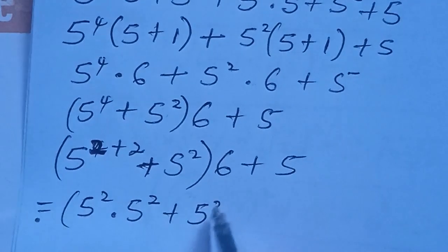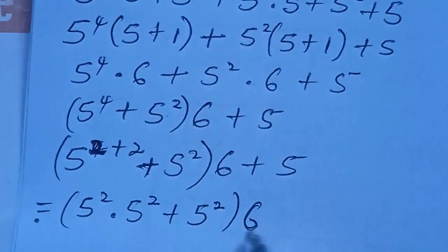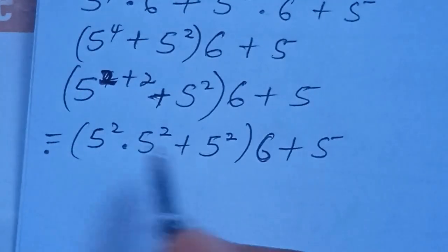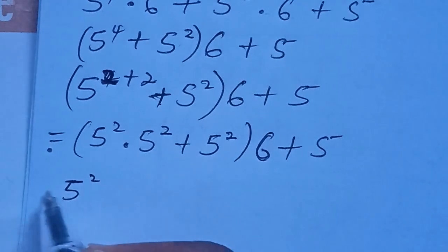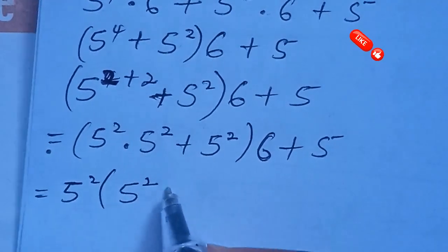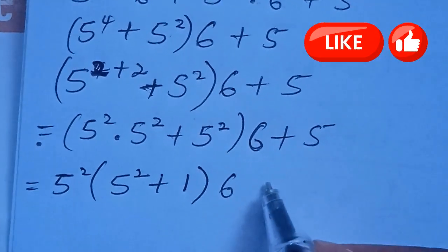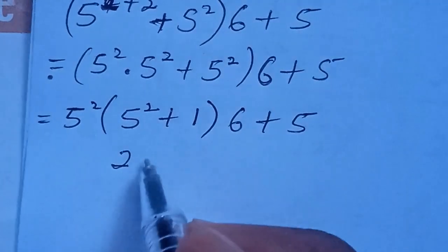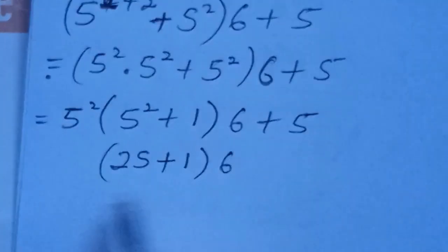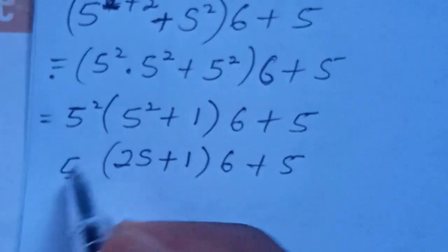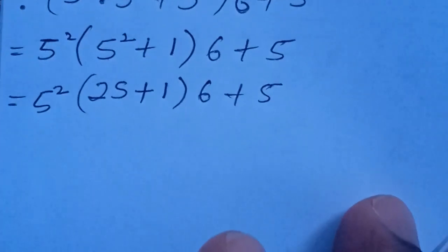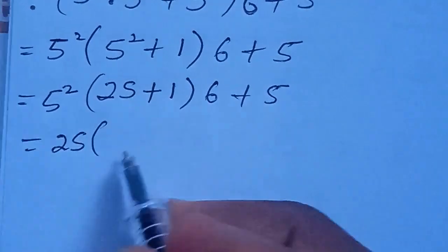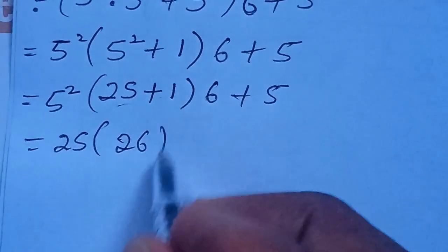Continuing, we have 5 to the power of 2 times 5 to the power of 2 plus 5 to the power of 2, all in brackets, multiplied by 6, plus 5. We factor out 5 to the power of 2: we get 5 to the power of 2 into bracket (5 to the power of 2 plus 1), close bracket, multiplied by 6, plus 5. Since 5 to the power of 2 equals 25, this becomes 25 into bracket (25 plus 1) multiplied by 6, plus 5.